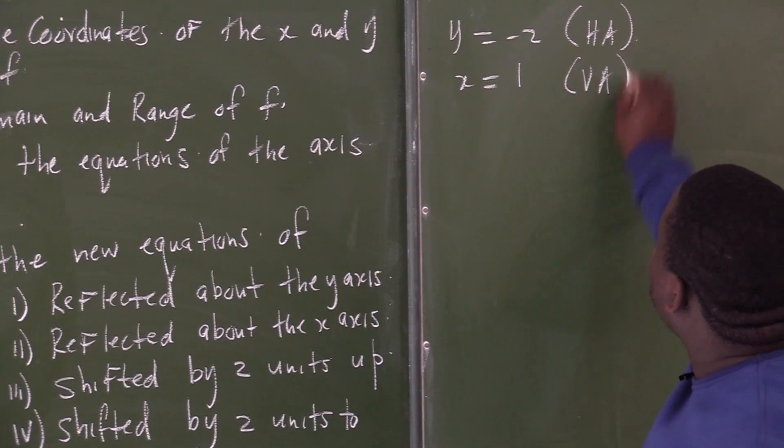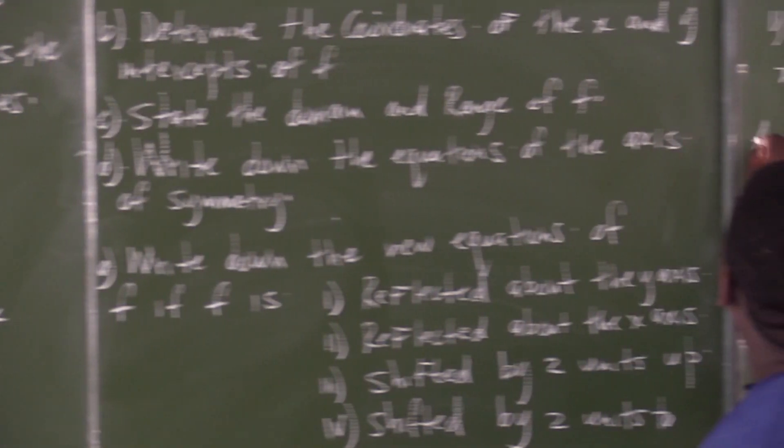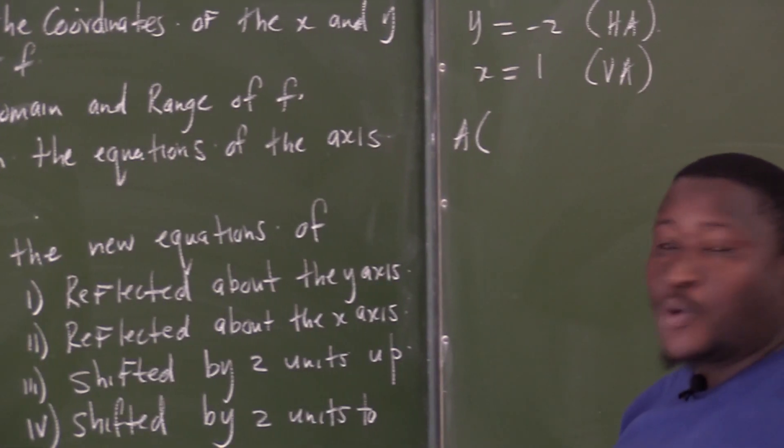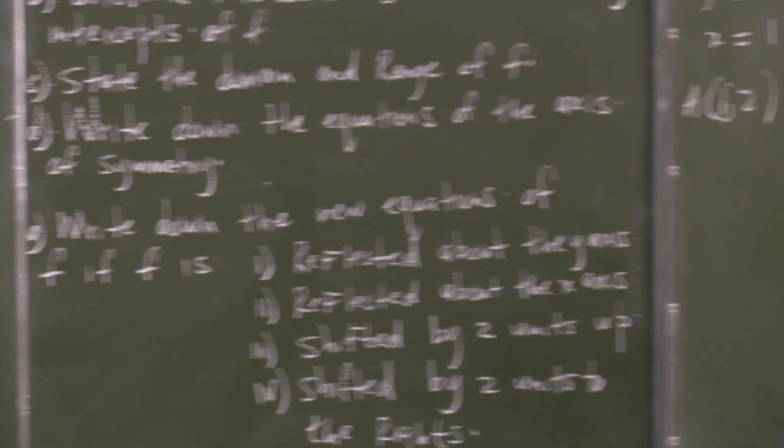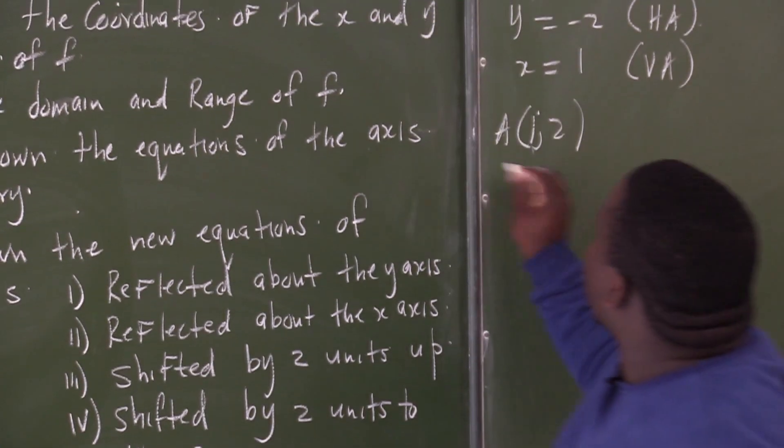Therefore, the coordinates of A must read as 1 and negative 2. So the answer for A should say 1 and negative 2.